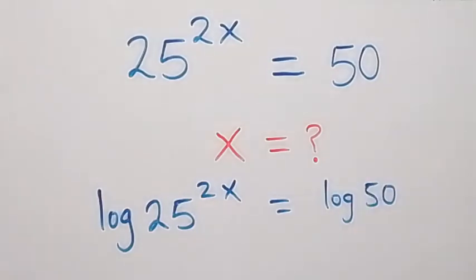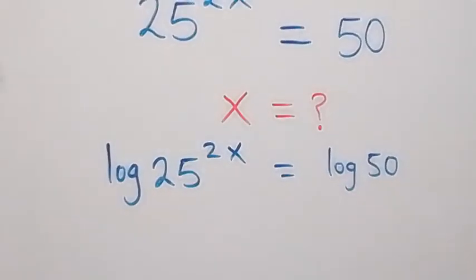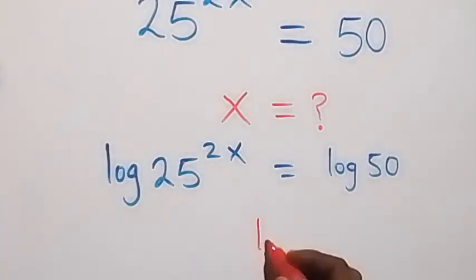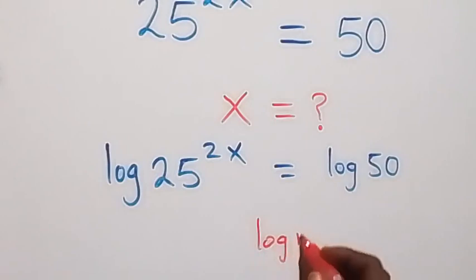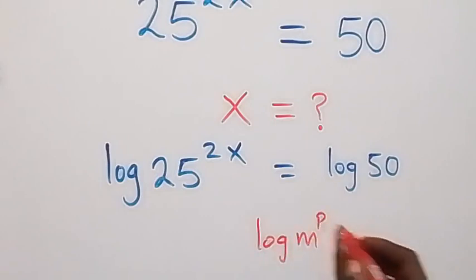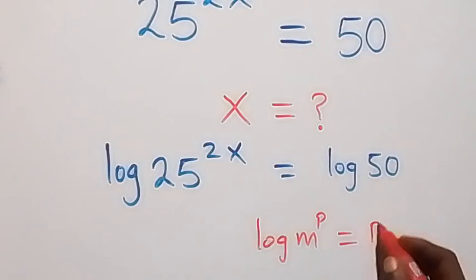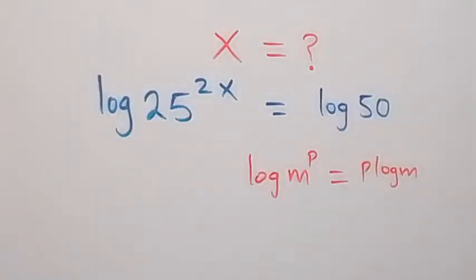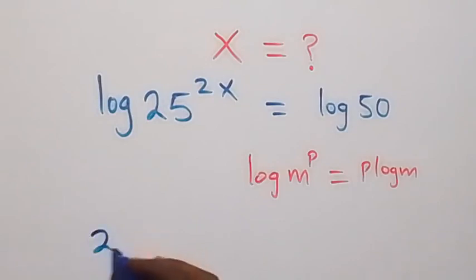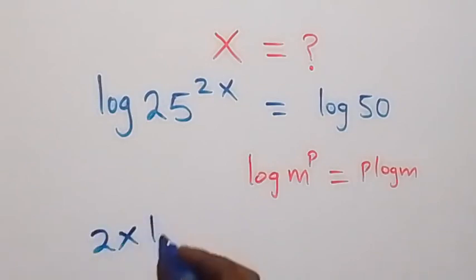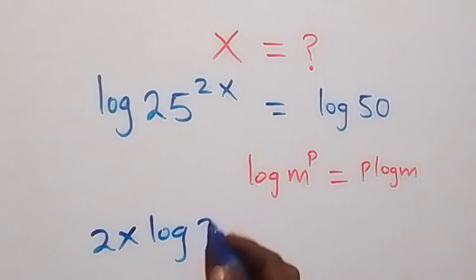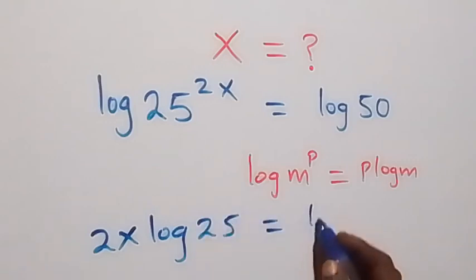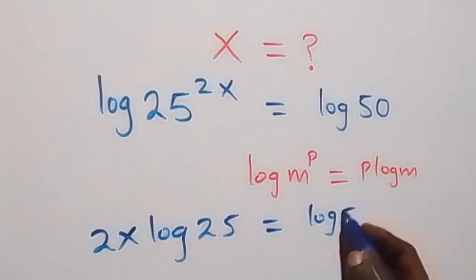We apply the log indices on the power: when we have log n raised to power p, this can be written as p log n. Applying this here, 2x serves as the power, so we have 2x log 25 equals to log 50 on this side.